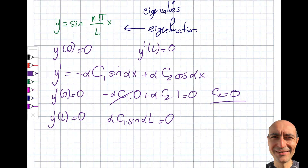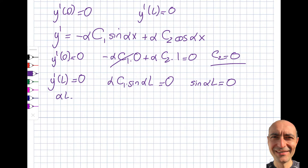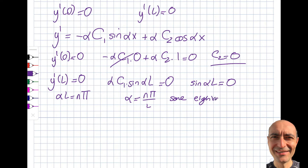C2 is gone this time, whereas before C1 was gone. Using the second boundary condition, I get −αC1 sin(αL) = 0. C1 = 0 is the trivial solution, which I'm not interested in, so sin(αL) = 0, giving the same eigenvalues: α = nπ/L.